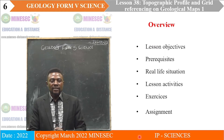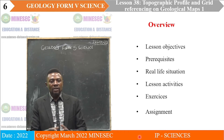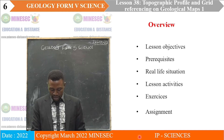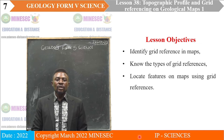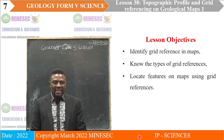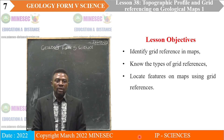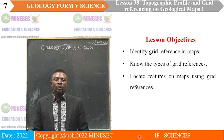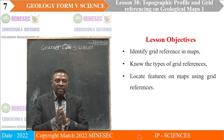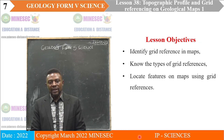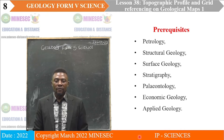The plan of this lesson covers lesson objectives and prerequisites, real-life situation, lesson activities, exercises, and assignment. At the end of the lesson you will be able to: identify grid references in maps, know the types of grid references, and locate features on maps using grid reference.